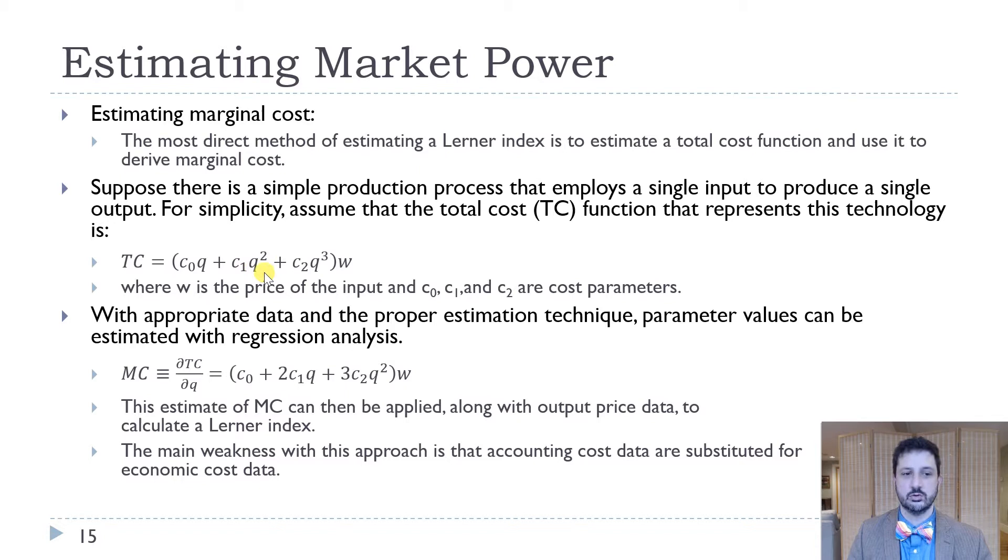As long as this is a close approximation of the total cost function, then we can take the derivative with respect to Q to get the marginal cost function. That would just be C0 plus 2C1Q plus 3C2Q squared plus W. Then we can use this estimate of the marginal cost along with output price data to calculate the Lerner index that we can't observe directly from the data. The main weakness of this approach is that we're using accounting cost data instead of economic cost data. That's pretty much always going to be true, but it might be the best that we can do.